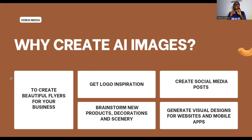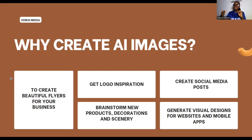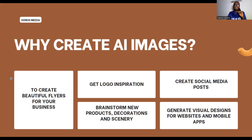You can use AI to get logo inspiration. If you're starting a new business and need ideas for a logo, AI can help you. You can also use it to create social media posts — posts with pictures or videos help the algorithm push your content, especially on Instagram where you can't just post text. With AI images you can create these pictures in five minutes. Your page will look beautiful and attractive, with pictures that relate directly to your post.